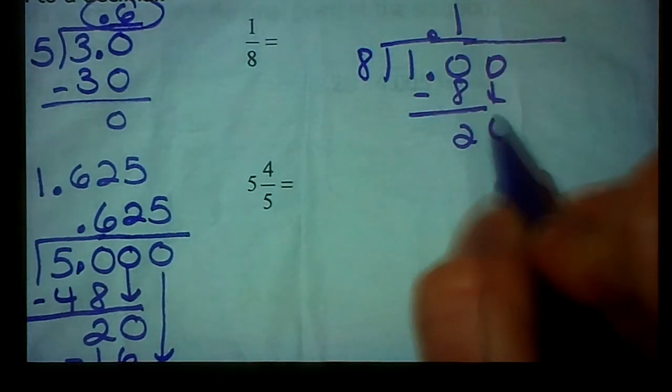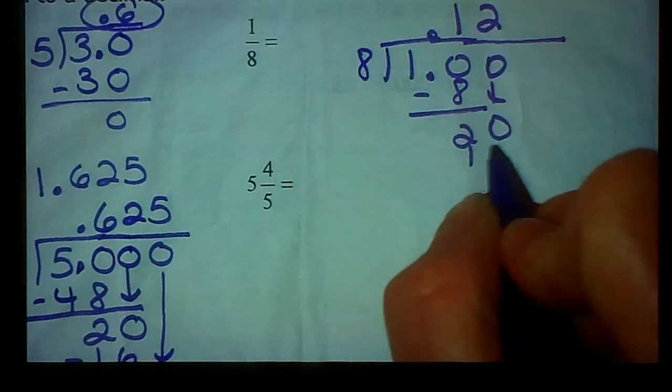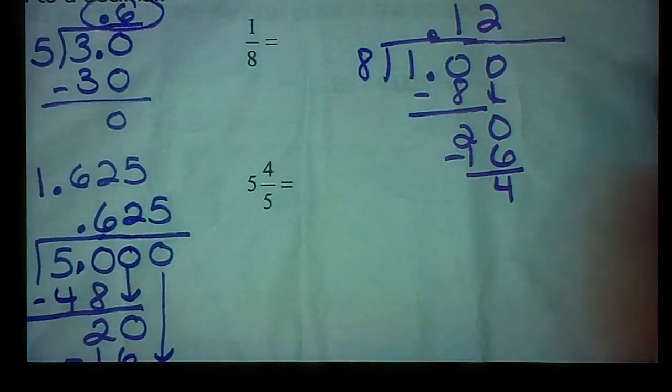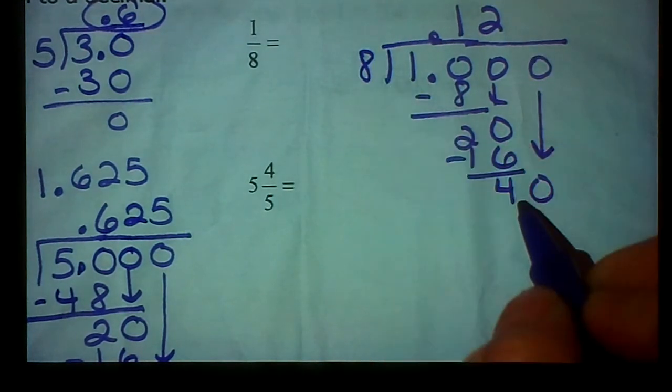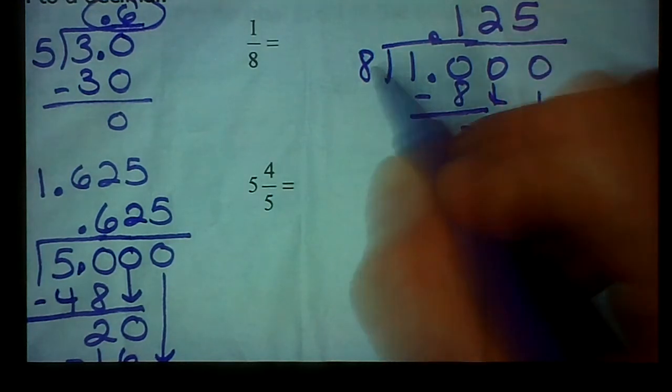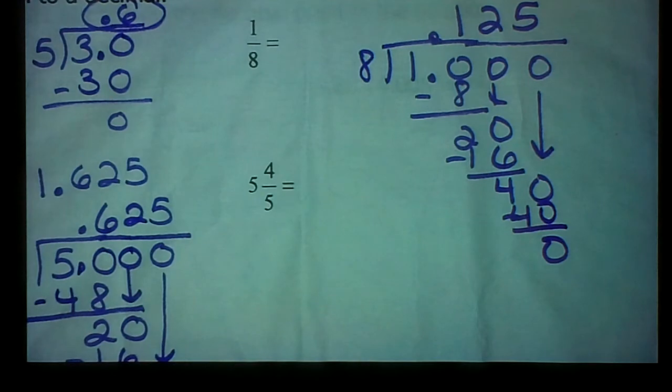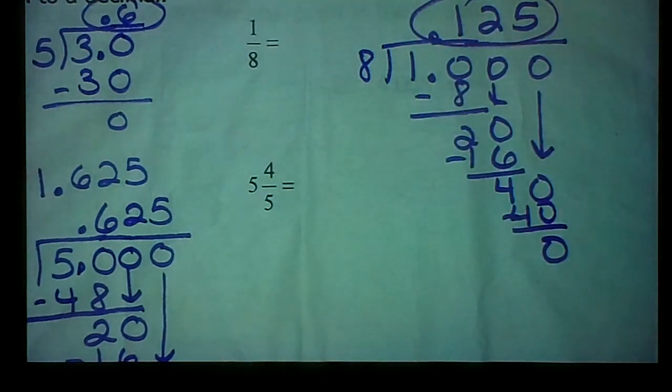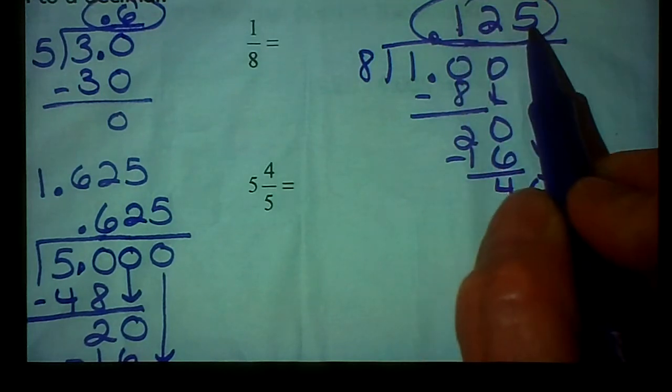So I'm going to add a 0. 8 goes into 20 twice. 8 times 2 is 16. 20 minus 16 is 4. We're not done yet. Add another 0 and bring it down. 8 goes into 40 five times. 8 times 5 is 40. And finally, we have the 0. So 1/8 is equivalent to 0.125, or 125 thousandths.